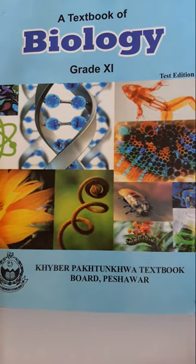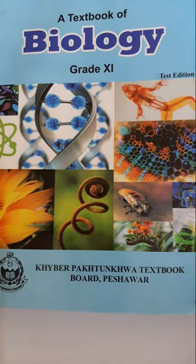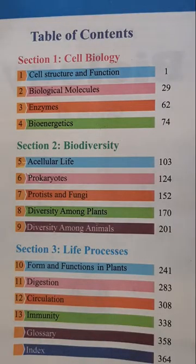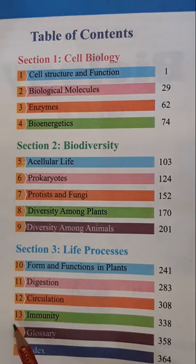On the screen, this is your new textbook of biology, Class 11, Khyber Pakhtunkhwa Textbook Board, Peshawar. Now if you look into the table of contents, there are a total of 13 chapters in this book which are divided into three sections: section 1, 2, and 3.